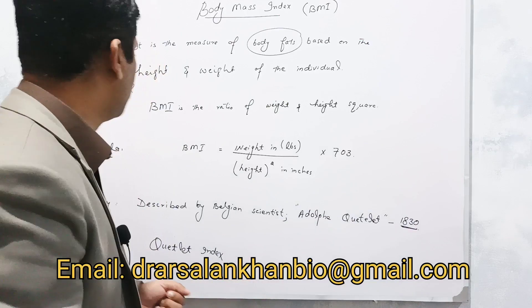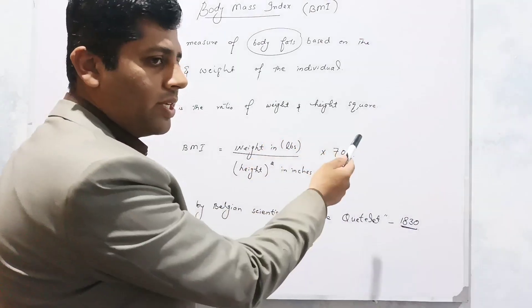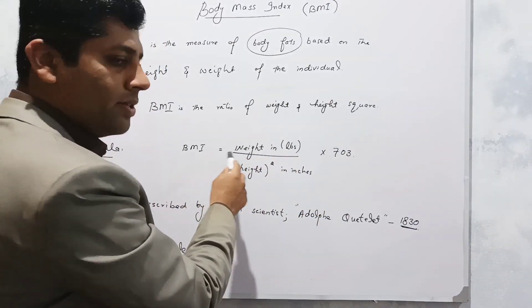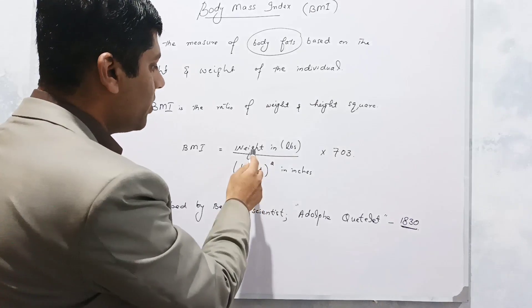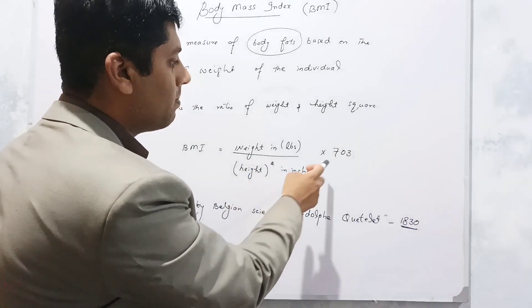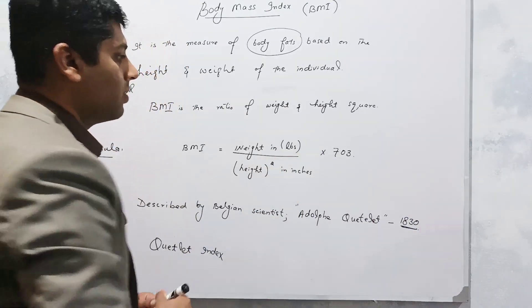This is called BMI. It is the ratio of weight and height squared - we take height in square. What is the formula of BMI? In BMI, it is the ratio between weight and height. Weight is taken in pounds and the height square taken in inches is multiplied by a factor of 703, so we will get the desired BMI.